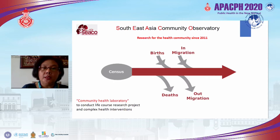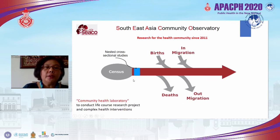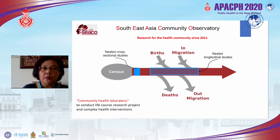I'll demonstrate HDSS operations and opportunities using the Southeast Asia Community Observatory, established in 2011. SICO was established as a community health observatory to conduct life course research and complex health interventions. We start with a census and then follow our population longitudinally until death, recording in-migrations, out-migrations, and deaths. We can conduct nested cross-sectional studies and nested longitudinal studies based on age groups — such as adolescent and elderly cohorts — or disease-based cohorts like hypertension and diabetes.